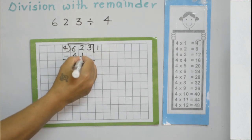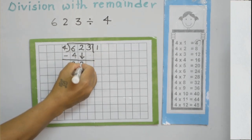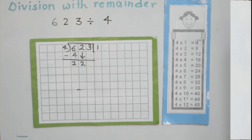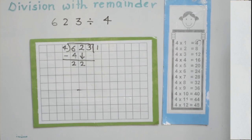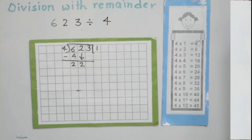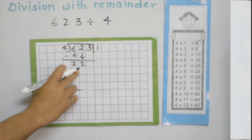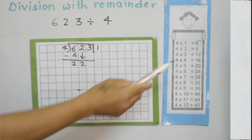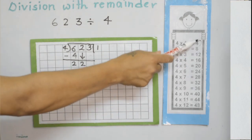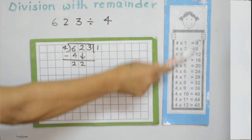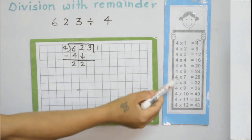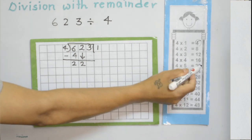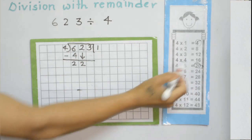Now bring this tens digit down. We have a new number: 22. We need to divide 22. We don't have 22 as a multiple of 4, so the nearest number is 20.